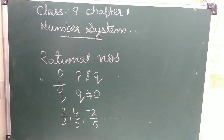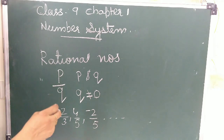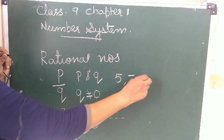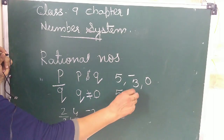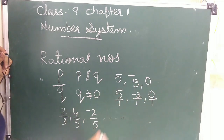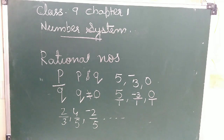From all four types of numbers we can conclude that all natural numbers are rational numbers, and all integers are rational numbers. For example, 5, minus 3, and 0 are integers. We can write 5 as 5/1, minus 3 as minus 3/1, and 0 as 0/1. So all natural numbers, all whole numbers, and all integers are rational numbers.